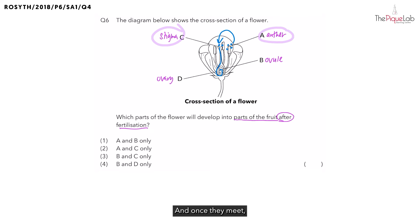And once they meet, the process of fertilization will take place. Usually, after fertilization, the anther and the stigma will wither and fall off.